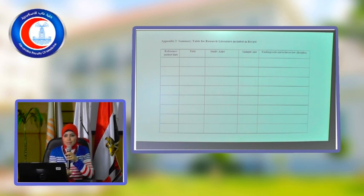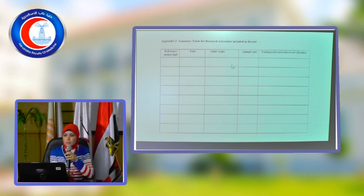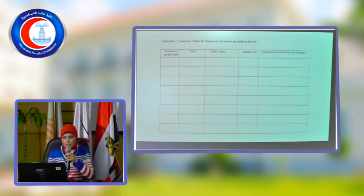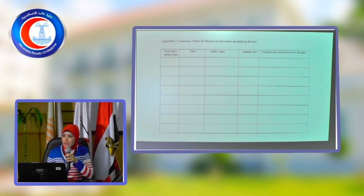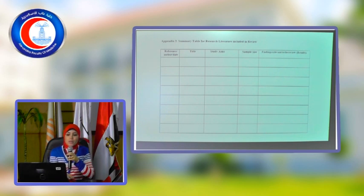You can write the version of the article, the reference, author and date, and the title. What is the aim of the study? The sample size — if it works on subjects, note the number. If the review is just talking about the topic and not participants, you will not write anything about sample size. The last thing is the findings related to the review — the important results from the articles you included.